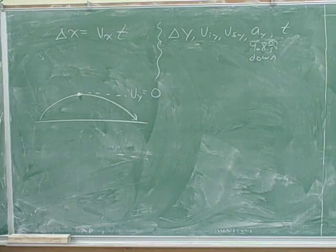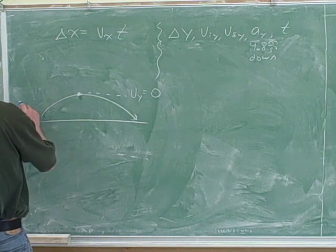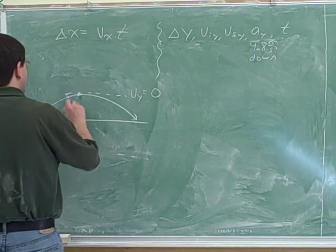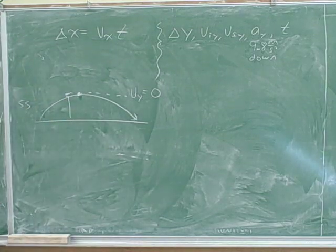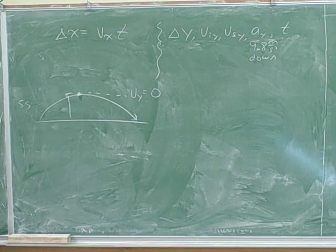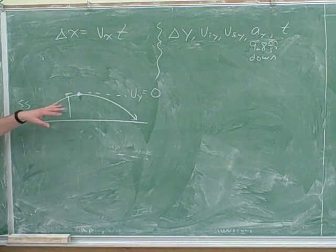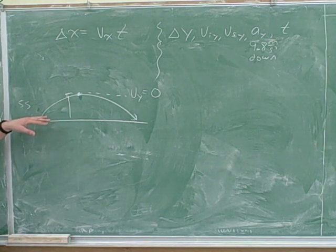One last thing about projectile motion is that it's symmetric. For example, if it takes five seconds to get from the ground to the peak, how long will it take to get from the peak to the ground? Five seconds. We don't need to figure that out all over again. So keep in mind that projectile motion is symmetric. That oftentimes can save you time when you're working on those problems.